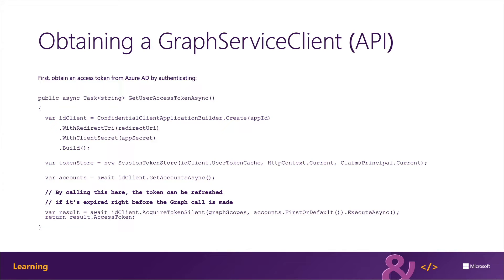The first step in the web application is to obtain an access token once the user is signed in. This can be done using the following code shown on the slide. The first step starts by creating an instance of a confidential client, as defined in the OAuth2 protocol spec. Confidential clients are those clients that can have an app ID and a secret that won't be exposed to the user of the application.